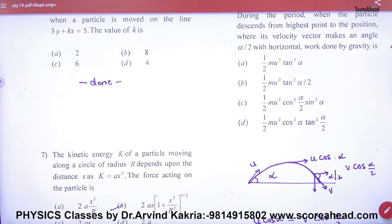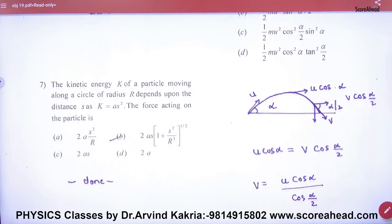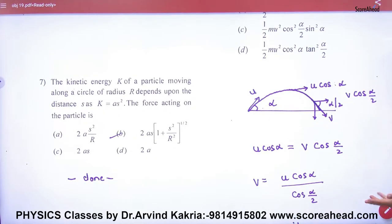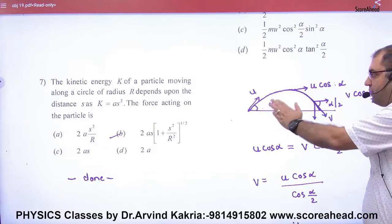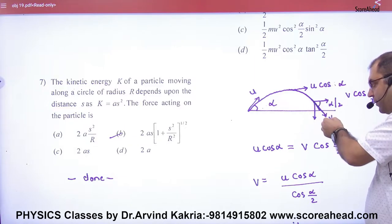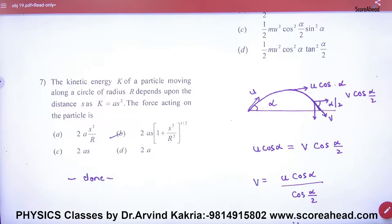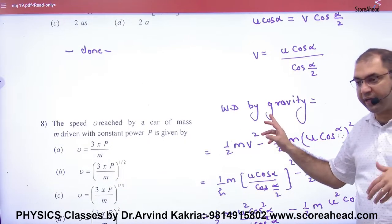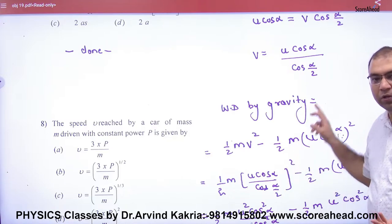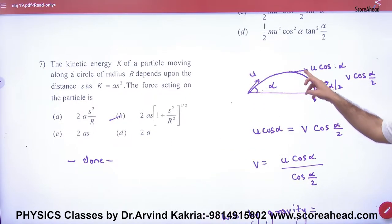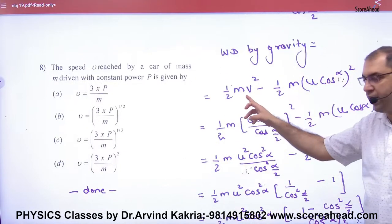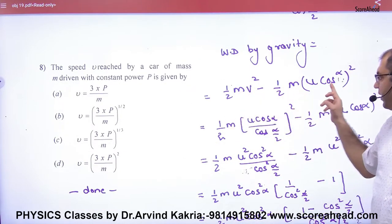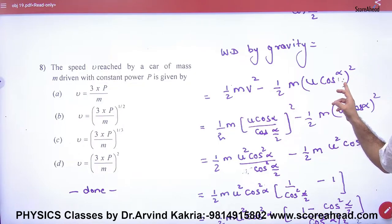It will come to the position where velocity vector makes an angle of alpha by 2 to the horizontal. So there are two positions - first here and the second here. Work done by gravity. Work done by gravity. This projectile, why is this gravity? Gravity work done. Change - topmost point u cos alpha. And here there is change of kinetic energy. Work done by gravity equals change in kinetic energy.